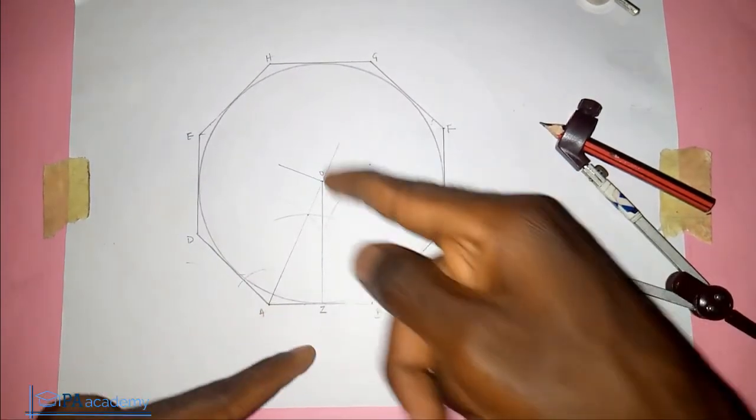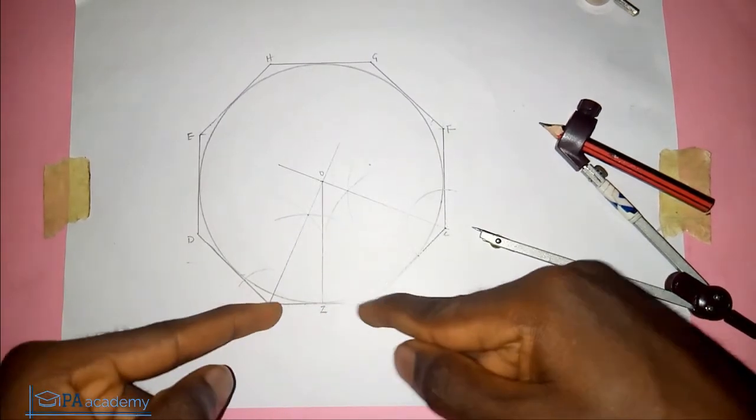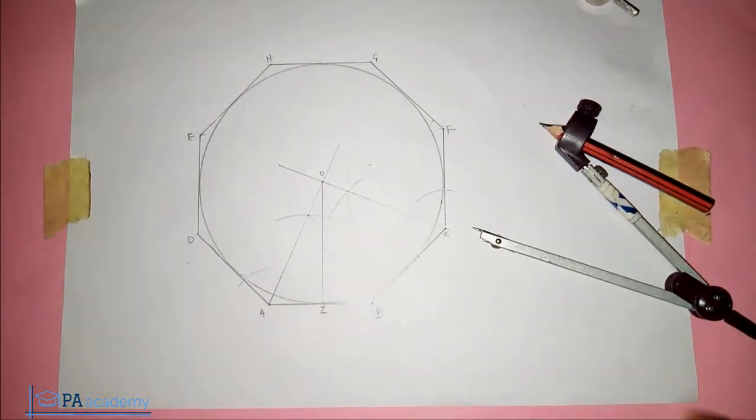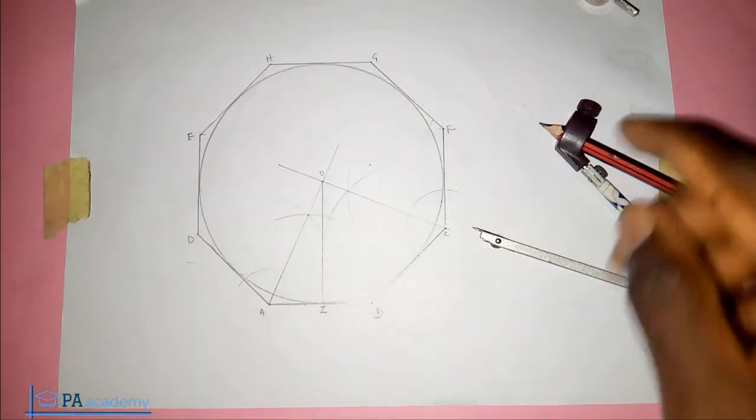From the center, you draw a straight line to the center of any of the sides. Measure it. That will give you the length of the radius, and then you're good to draw your circle.